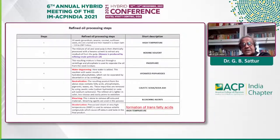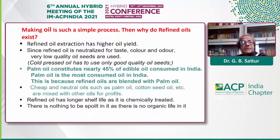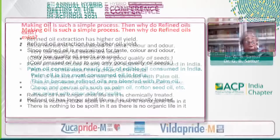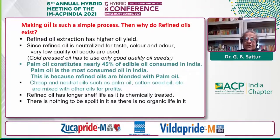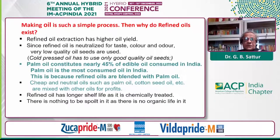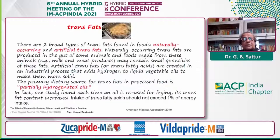That deodorization step is when trans fatty acids are formed. So why do we need refined oil? Because to make refined oil, you don't need good quality seeds, whereas cold pressing requires good quality seeds. They can use even substandard oil seeds. Palm oil — 45% is used in India, and some other oils are mixed with palm oil. Unfortunately, there is no check on this, and it goes on that the oil we consume is mixed with palm oil to make it cheaper and more easily available.